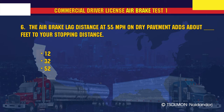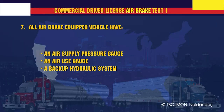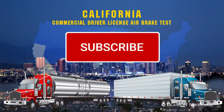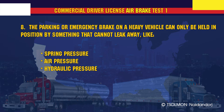The air brake lag distance at 55 miles per hour on dry pavement adds about 32 feet to your stopping distance. All air brake equipped vehicles have an air supply pressure gauge. The parking or emergency brake on a heavy vehicle can only be held in position by something that cannot leak away, like spring pressure.